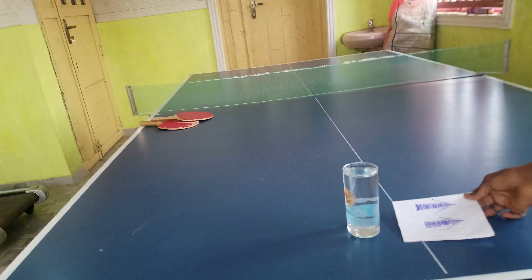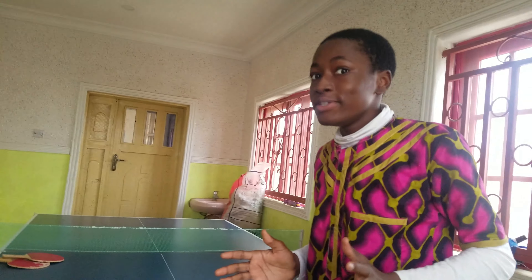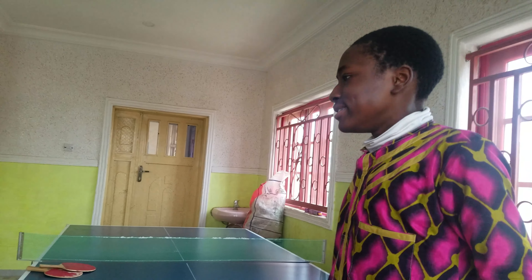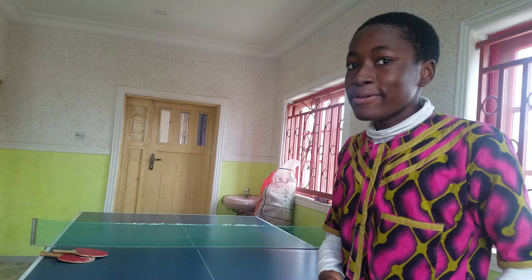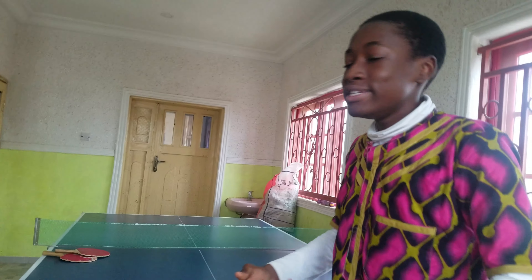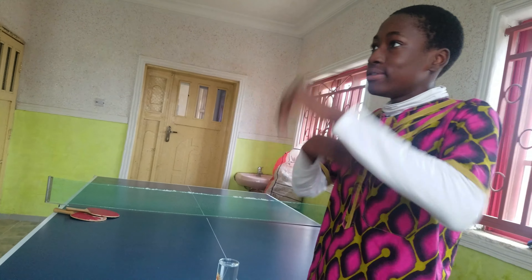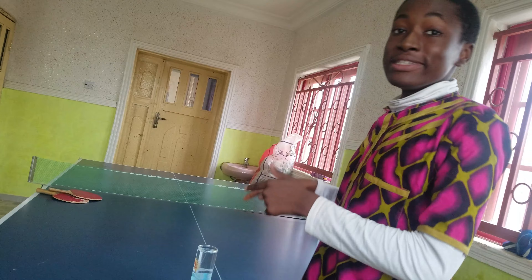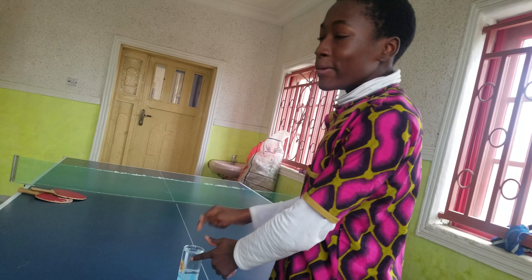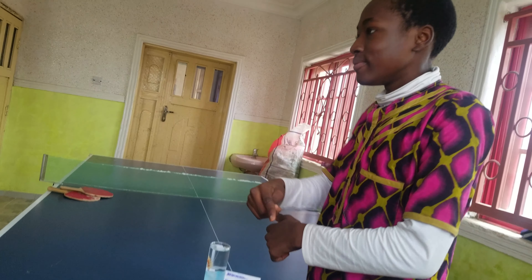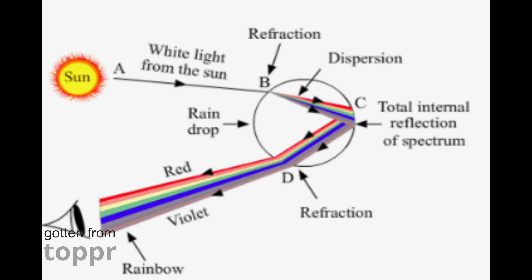I'm going to explain this phenomenon. It's quite easy actually. This is due to the refraction of light. Refraction of light is the bending of light when it passes from one medium to another. The first medium it passes through is air, and the second medium is the water. So the image appears turned backwards because of refraction of light.